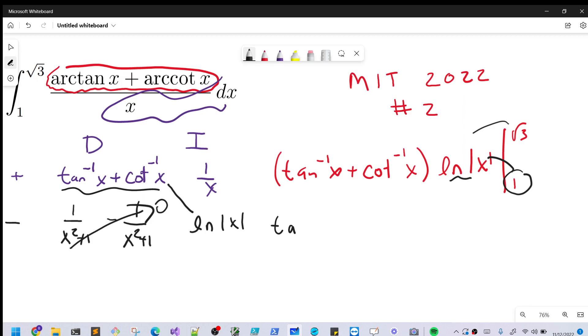So we're going to be evaluating tan inverse square root of three, plus cotangent inverse square root of three, ln, we can drop our absolute value, just ln of square root of three.